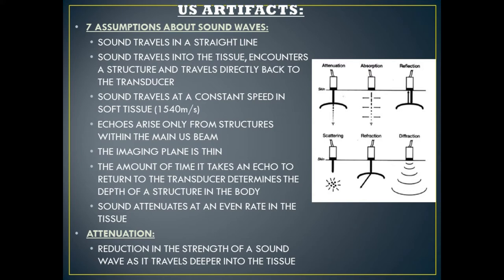The first assumption that an ultrasound machine makes is that sound travels in a straight line. Assumption number two, sound travels into the tissue, encounters a structure, and travels directly back to the transducer. Assumption three, sound travels at a constant speed in soft tissue — 1540 meters per second.